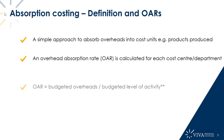An overhead absorption rate is always calculated using a standard calculation whereby we take the budgeted overheads of that department or cost centre and divide this by a budgeted level of activity. This calculation is based on budgeted figures. This is done at the start of a financial period because this is when a business needs to have a decent understanding of what its products are going to cost. The budgeted level of activity within the OAR calculation actually varies depending on the department under consideration.